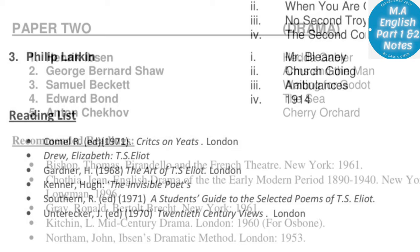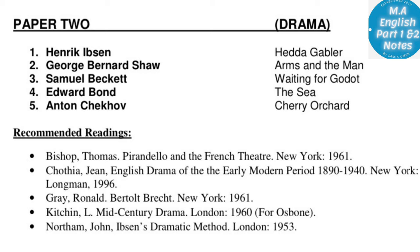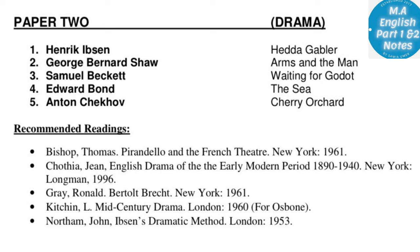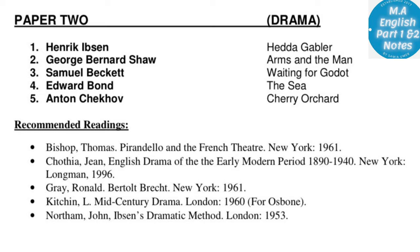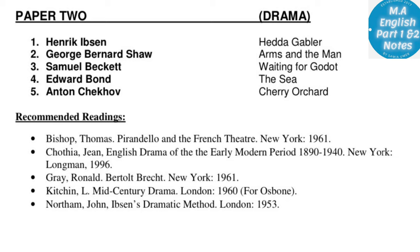Moving to the next paper — Drama. This is Modern Drama, which includes: Hedda Gabler by Henrik Ibsen, Arms and the Man by George Bernard Shaw, Waiting for Godot by Samuel Beckett, The Sea by Edward Bond, and The Cherry Orchard by Anton Chekhov — five dramas are included. You can thoroughly prepare four of them and definitely attempt all questions correctly. Recommended readings are also listed.